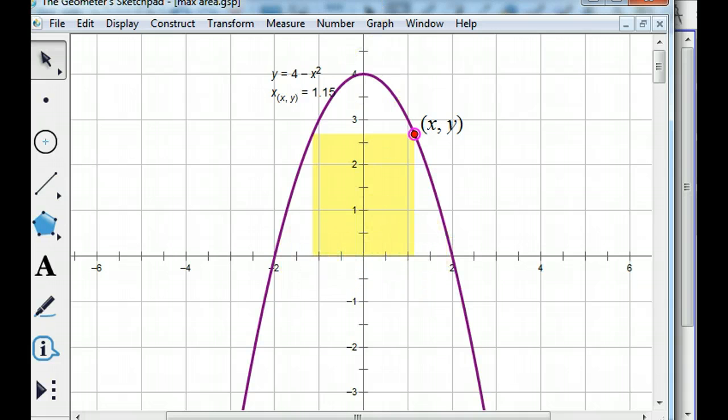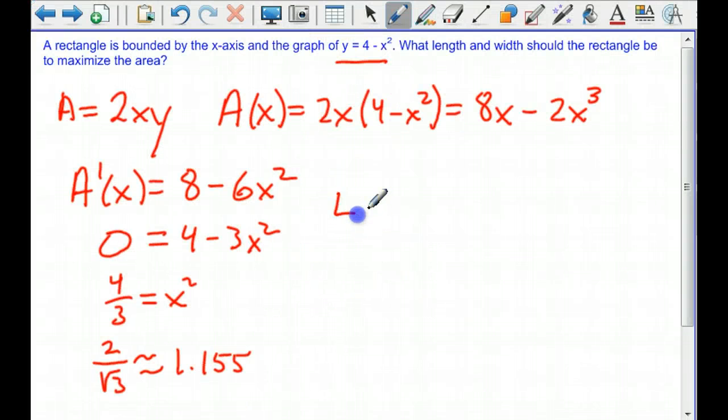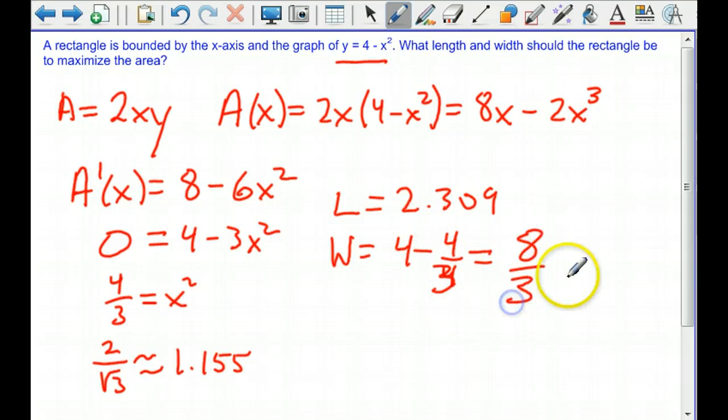So the total length is going to be 2 of those x's. That'll be 2.309. And our width is going to be 4 minus x squared. And x squared, remember, is 4 thirds. So that's 12 thirds minus 4 thirds is 8 thirds.